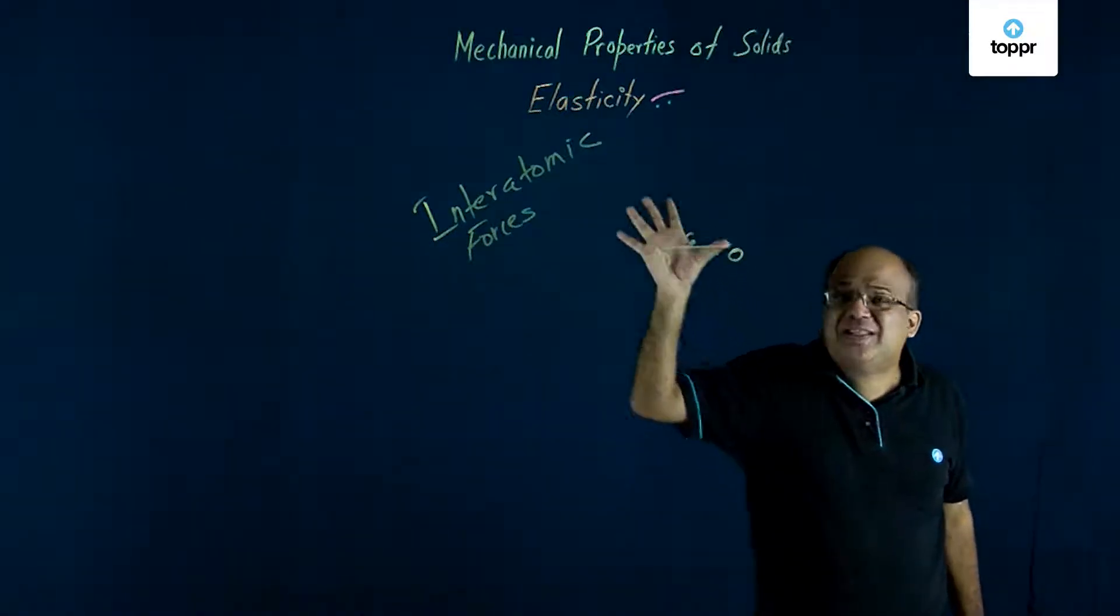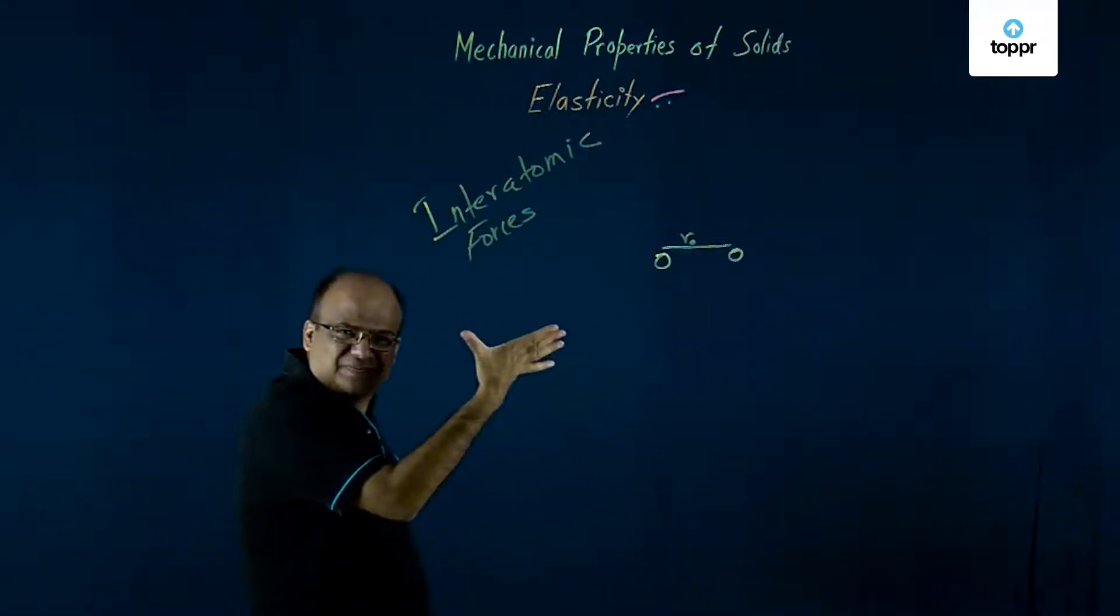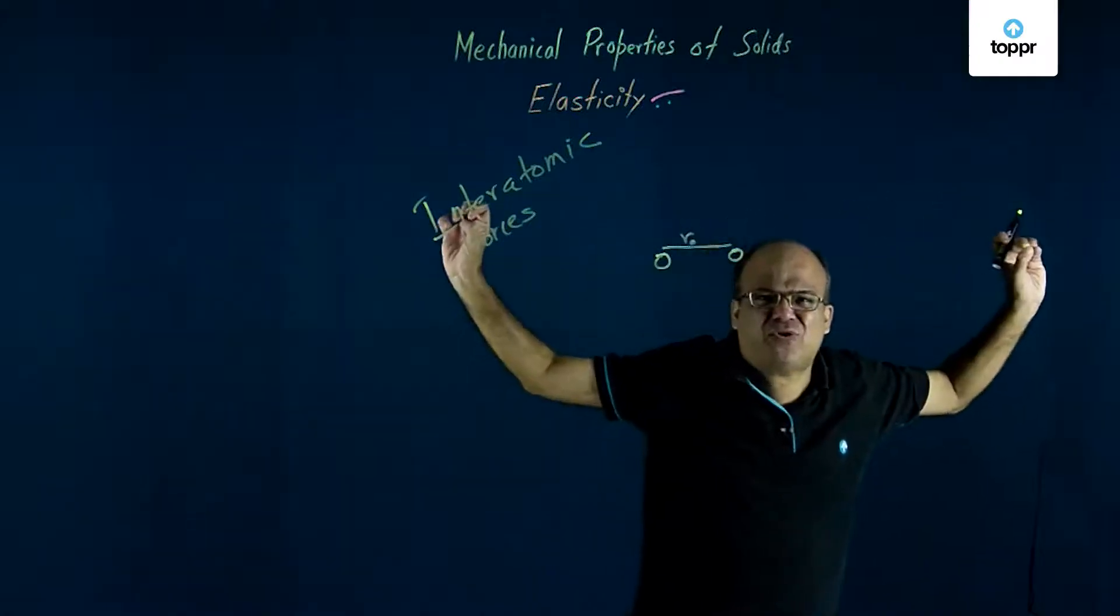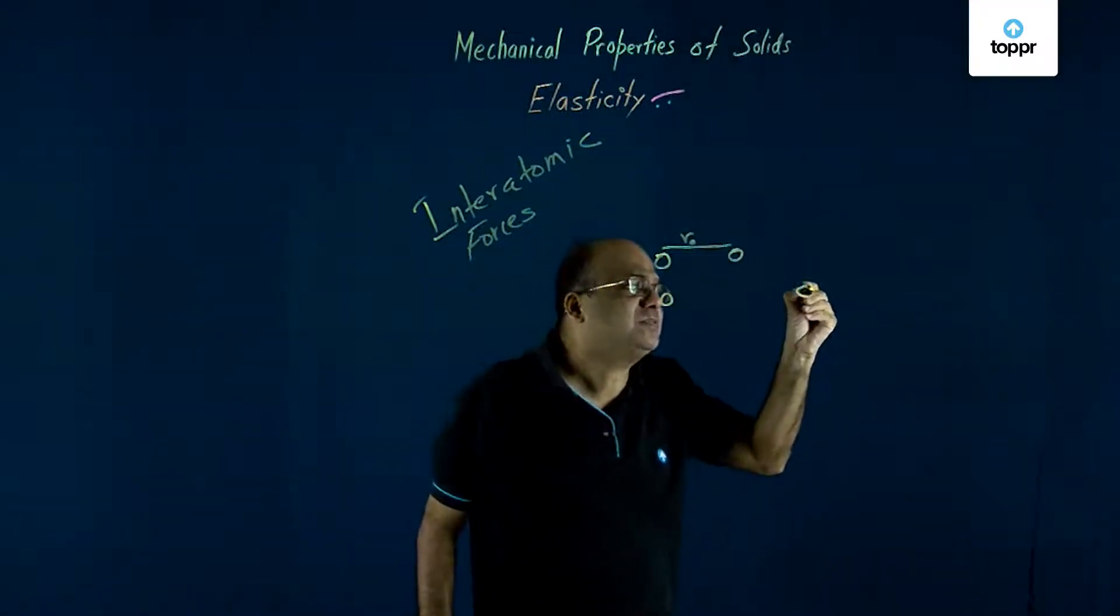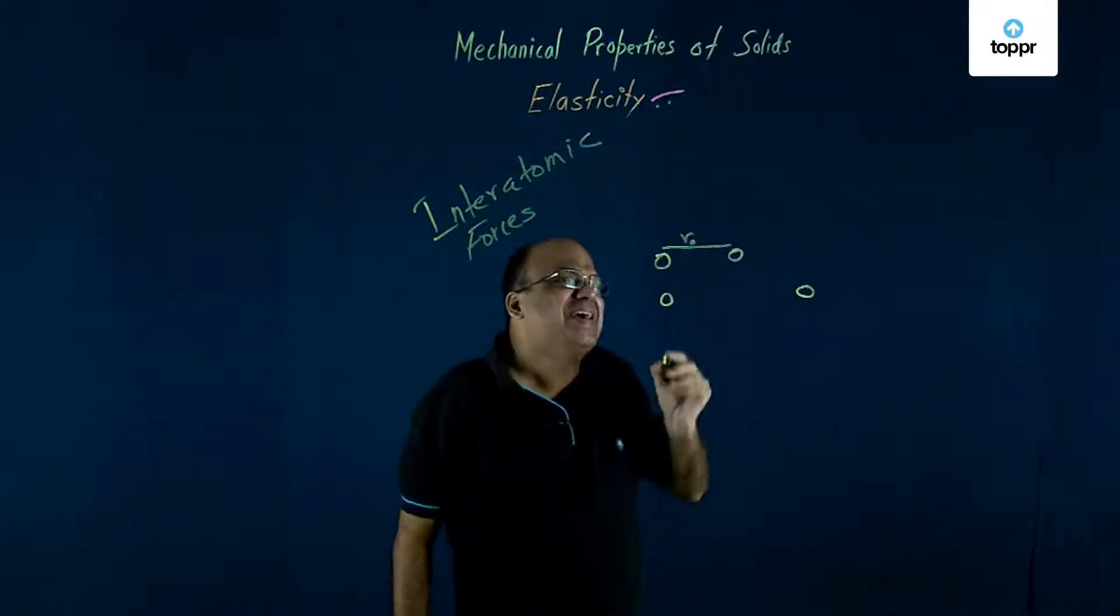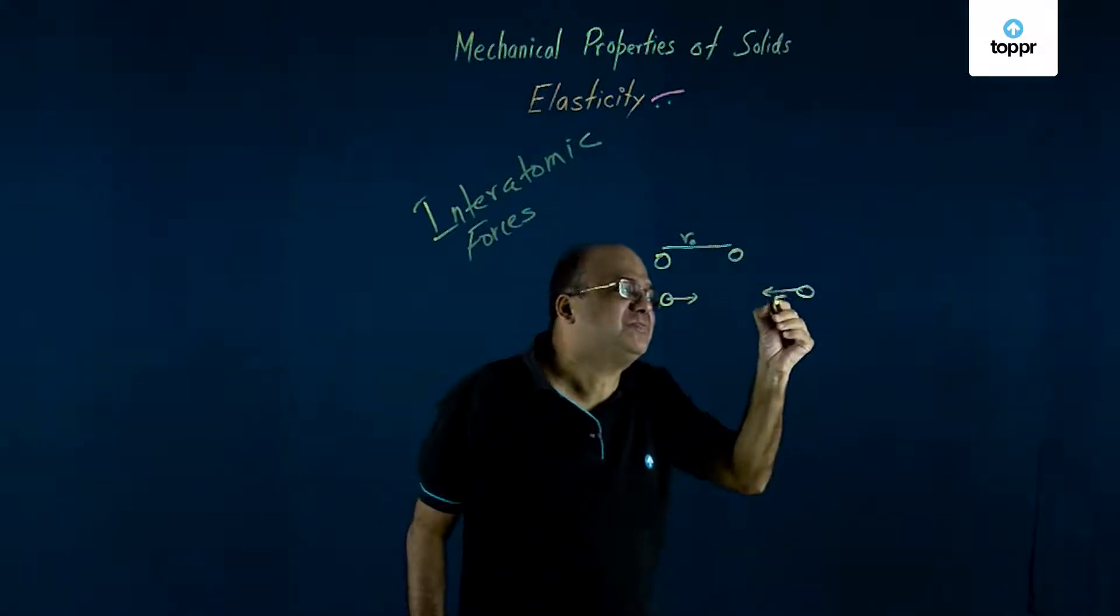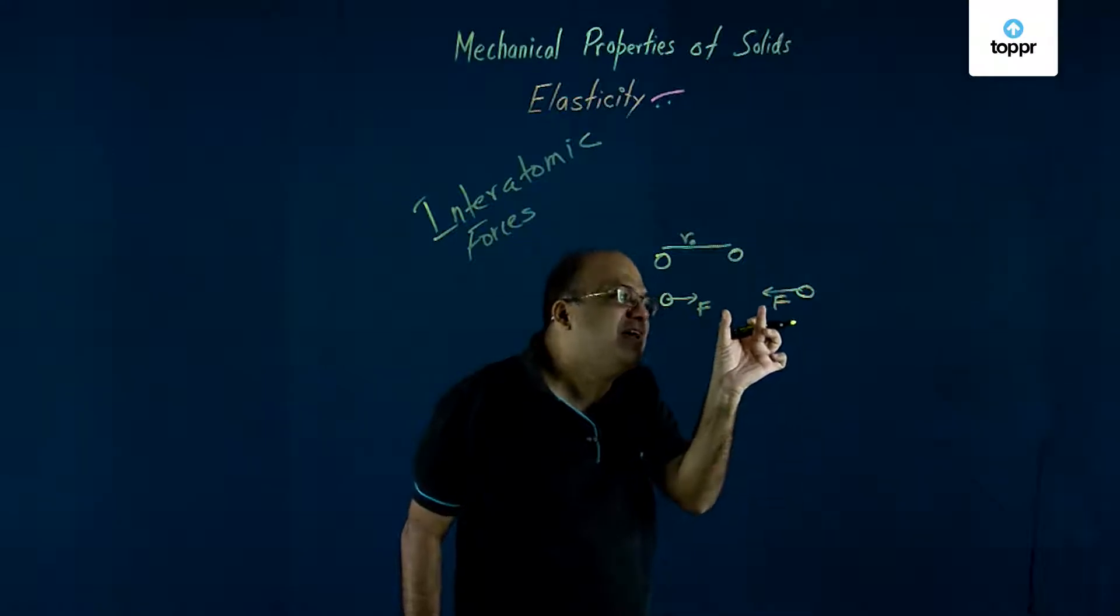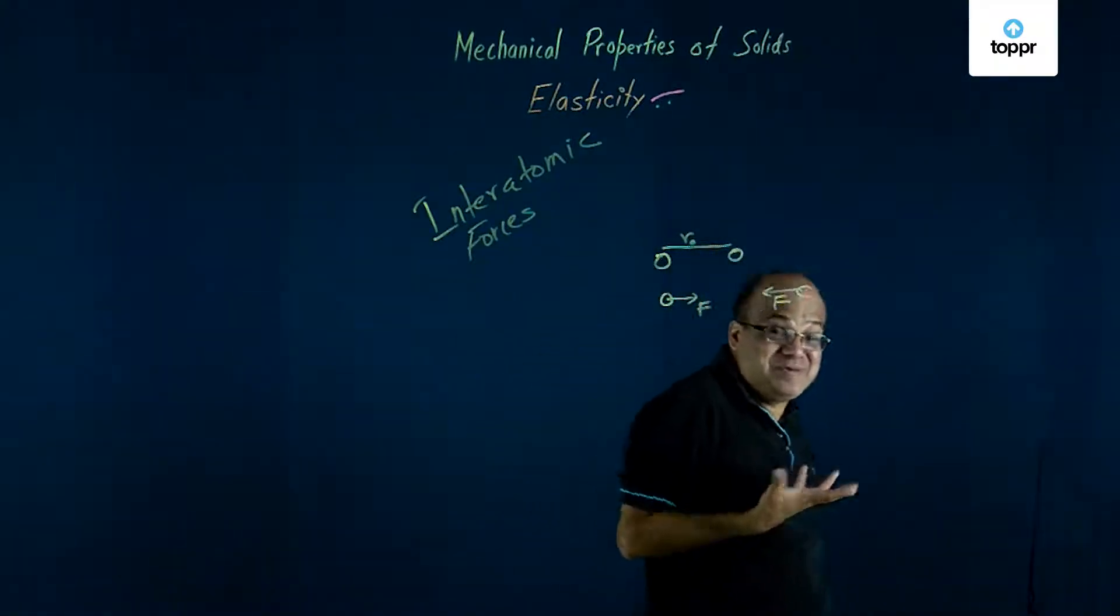So these two atoms they want to remain at a distance R0. When you apply a tensile force these atoms are pulled apart. The atoms don't like that. So now the force between them becomes attractive and this attractive force tends to bring the atoms to this normal or equilibrium separation.